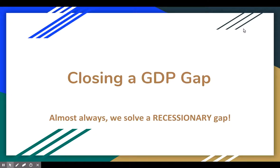Hey guys, Mr. Flanagan here, doing a quick recap on how do we close a GDP gap. We're going to be looking at how to solve a recession because that is by far the most commonly asked about way on the AP test in terms of solving a gap. They could ask you to solve an inflationary gap — all that means is we would want to reduce spending or increase taxes — but we're going to focus on a recession, as that is by far the most frequently asked about type of question on the AP exam.